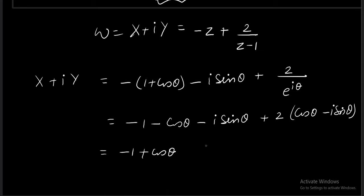Clubbing all the terms together, we get minus 1 plus cos theta. And then we have total minus 3 iota sin theta.